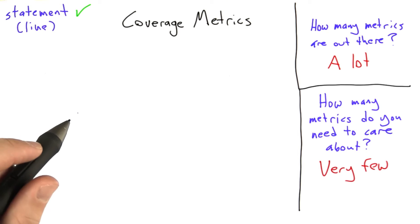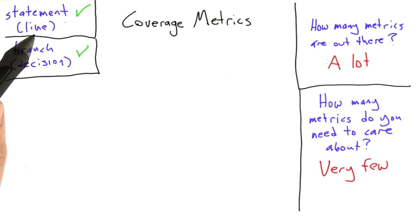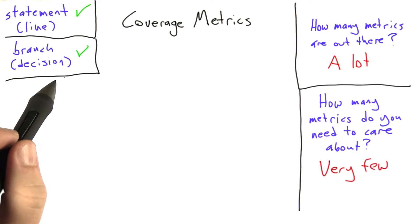We've looked at a couple of common coverage metrics that come up in practice. We've looked at statement coverage, which is a close relative to line coverage, and branch coverage, also called decision coverage. For most of you out there, these are the coverage metrics that are going to matter for everyday life.